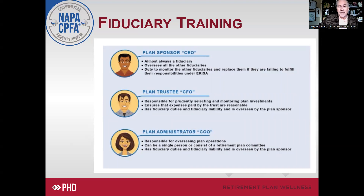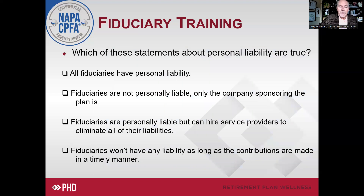The CFO is the plan's trustee — the one signing documentation and ultimately responsible for the exchange of money, distribution of funds, and things like that. That's the trustee, or the CFO. And then the plan administrator is serving almost like the COO of the plan. This could be an individual, but in most cases it's the retirement plan committee, which operates kind of like the COO of the company or the workplace retirement plan.